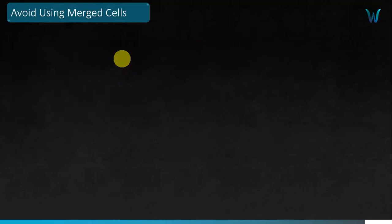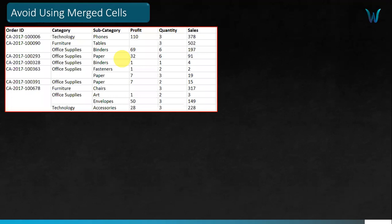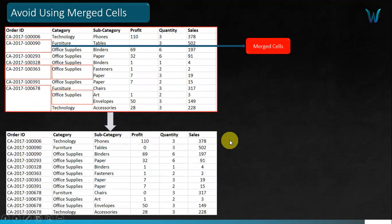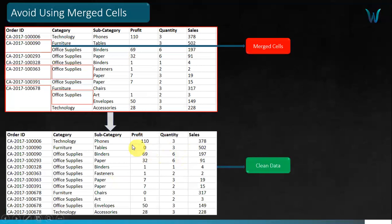The next best practice is to avoid using merge cells, and this applies when working with spreadsheet data sources like Excel or Google Sheets. You can see the merged cells highlighted in red. When you clean this up, they are unmerged and the values are replicated across all those cells. It's best to clean up data and unmerge any merged cells in your spreadsheet data source.